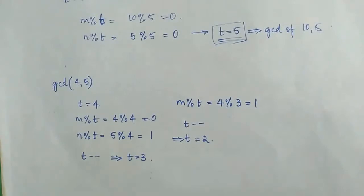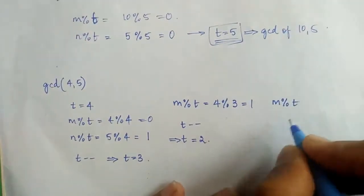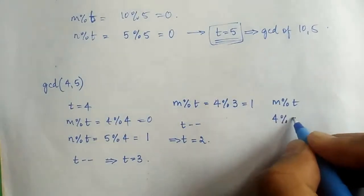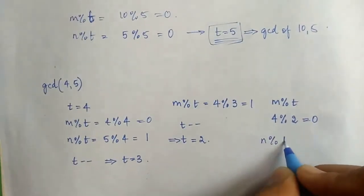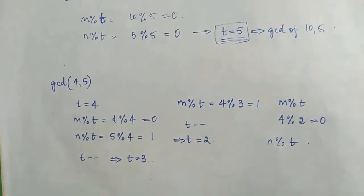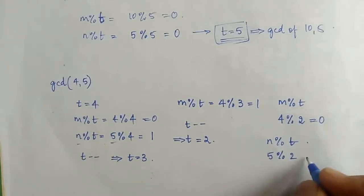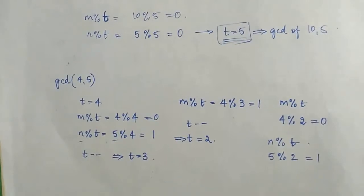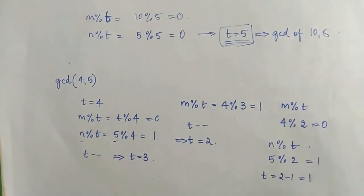Again we go back to the second step and perform m mod t. m is 4 and t is now 2, so 4 mod 2 is equal to 0. Since it is 0 we go to the third step and perform n mod t. n is still 5, so 5 mod 2 equals 1. Since it is not equal to 0 we go to the fourth step and decrement t by 1. Now t becomes equal to 1.